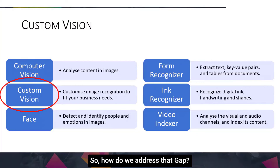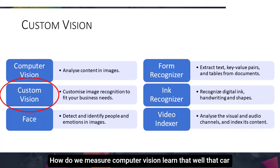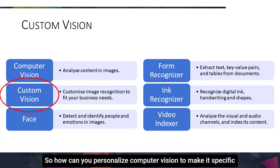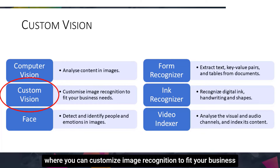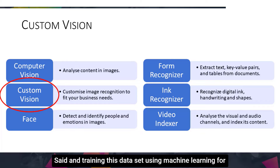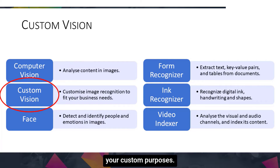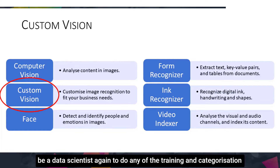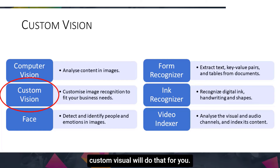How do we address the gap? How do we make Computer Vision learn that car with flowers is actually one of those pictures we do want to recognize? This is where you need Custom Vision — where you can customize image recognition to fit your business needs by providing your own dataset and training it using machine learning for your custom purposes. The beauty of Custom Vision is that you don't have to be a data scientist. Custom Vision will do the training for you — you just have to provide images.